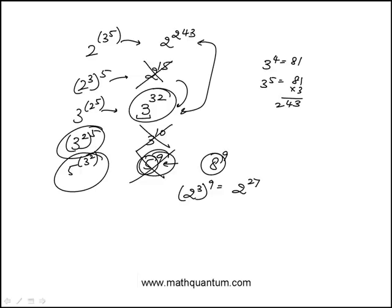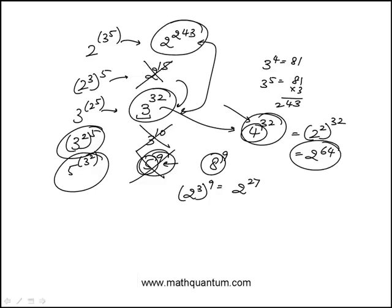Now it's about comparing between 3 to the 32 and 2 to the 43. I can replace 3 with 4, noticing that this is a larger number, and then 4 is 2 squared. Why am I choosing 4? Because then I'm able to write this as a base of 2, and this is 2 to the 64, and 2 to the 64 is smaller than that, which means that clearly A is the largest.